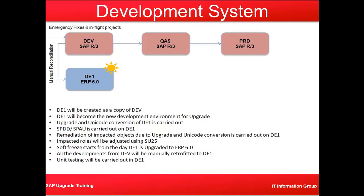There is also a third option where we can merge the two things — we adapt whatever we want to adapt and leave the rest. So that is a merge operation. Remediation of impacted objects due to upgrade and unicode conversion is carried out in this system. The impacted roles will be adjusted using SU25 in this system. Soft freeze starts from the day DE1 is upgraded to SAP ERP 6.0 — that is when the new upgraded development system becomes available.